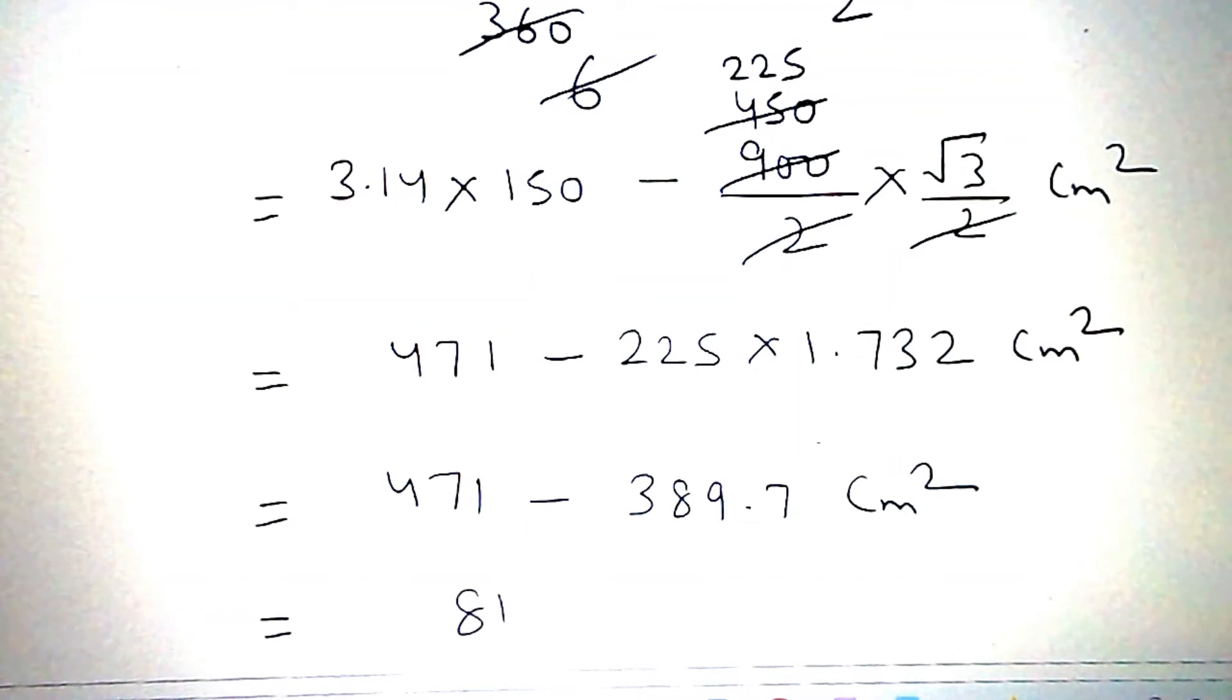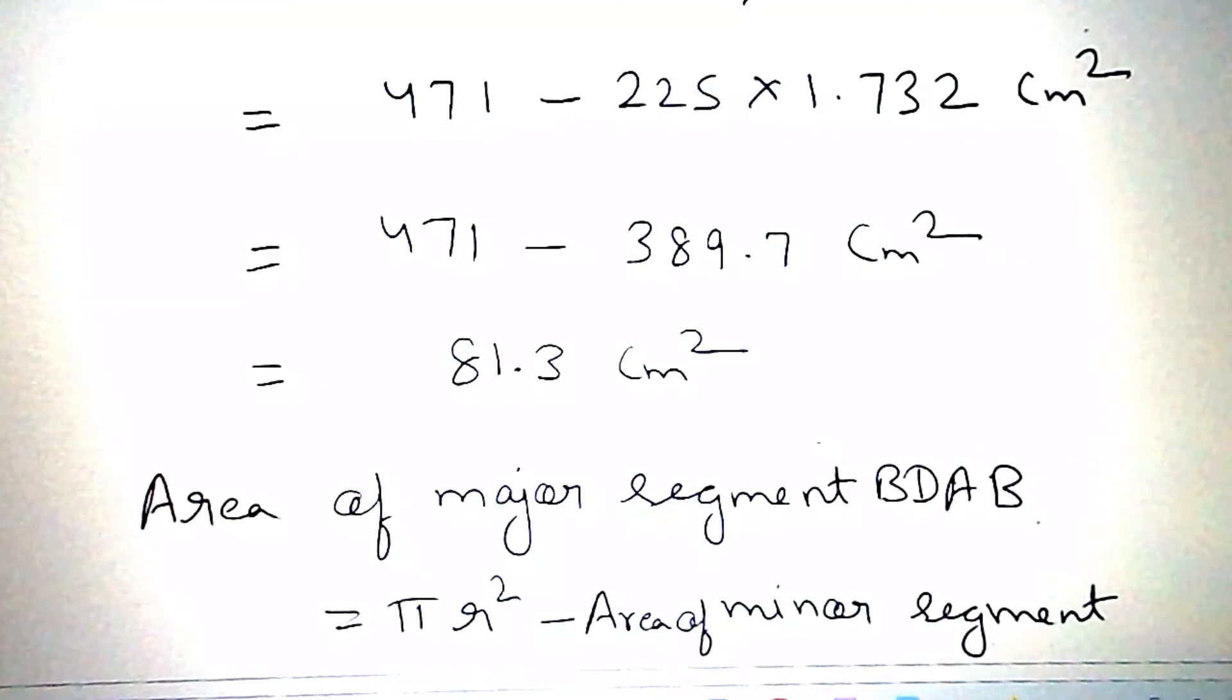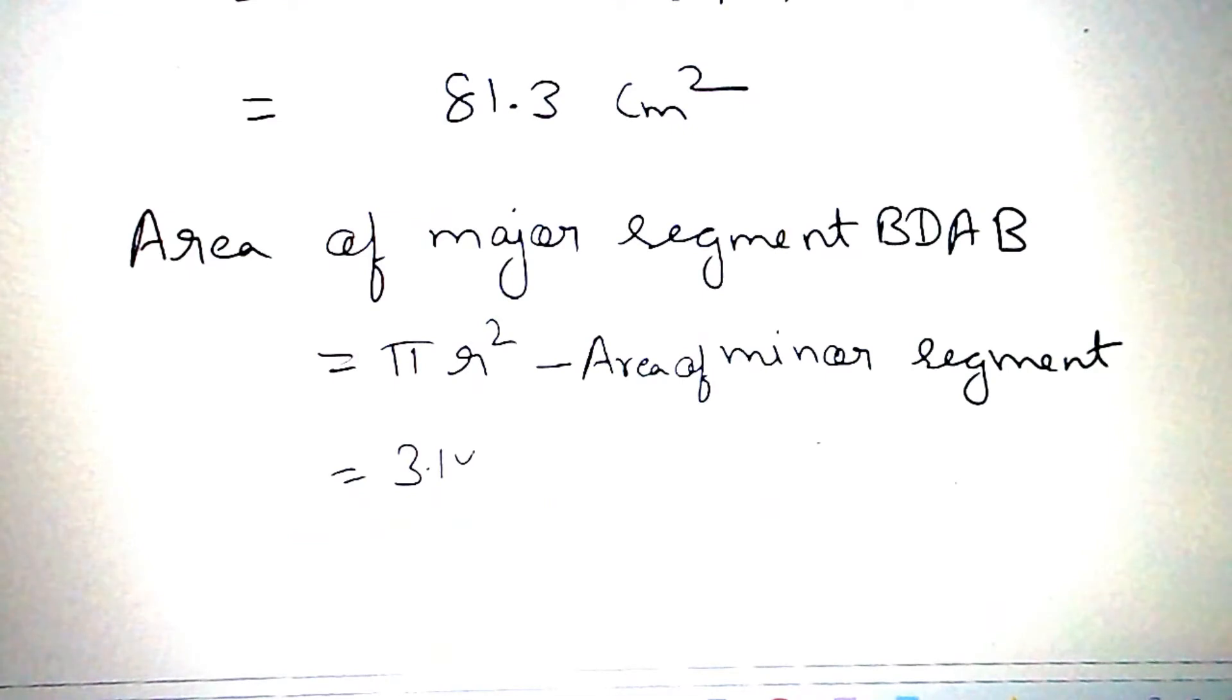Area of major segment BDAB is equal to pi r square minus area of minor segment. 3.14 into 30 into 30 minus area of minor segment that is 81.3 cm square.